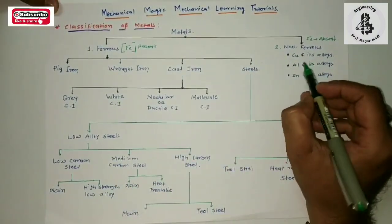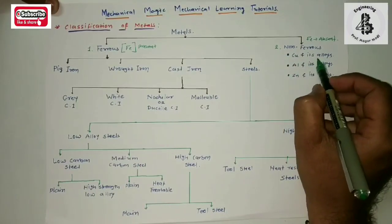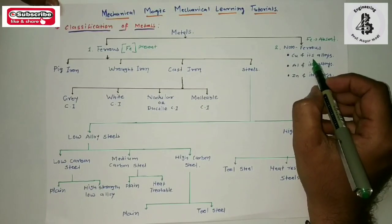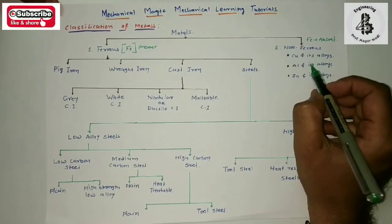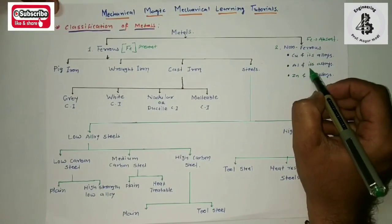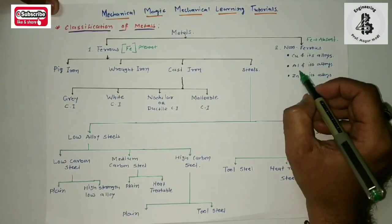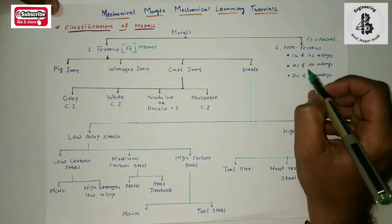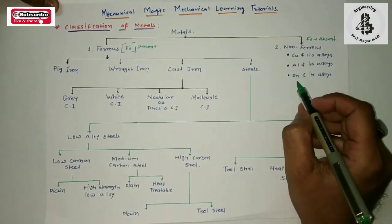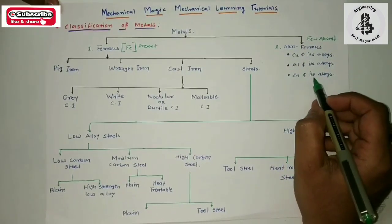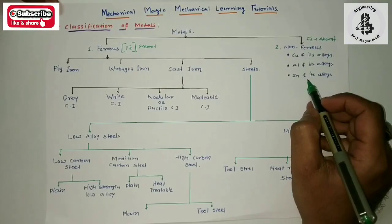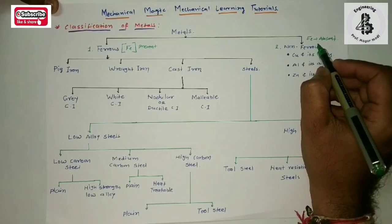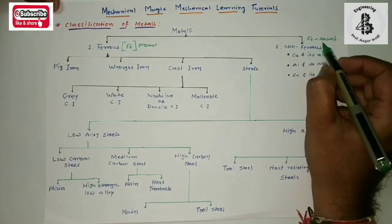In the non-ferrous category, copper and its alloys — generally brass and bronze — are considered non-ferrous materials. Aluminium and its alloys — Y alloys, Duralumin, and Hindalium — are also considered non-ferrous materials, as is zinc and its alloys. Generally these are not attracted by magnets, as Fe is absent from the composition of these materials.